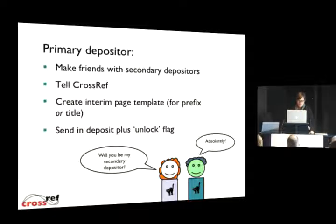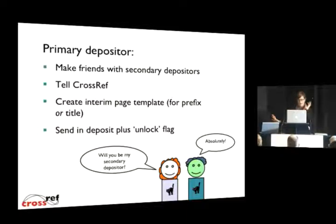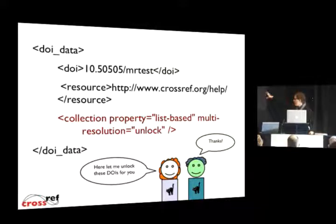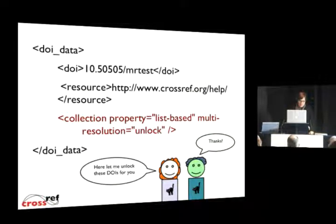We can have two primary depositors assigned to a prefix, but that occasionally causes problems — it's kind of a mess and I don't recommend it. People overwrite each other's metadata and get confused about who's primary and who's secondary, and it's very hard to figure out what's going on. For the primary depositor, you need to send in either with a metadata deposit or as a standalone deposit the unlock information — this unlock flag highlighted in red says 'collection property'. This flags the DOI as being a multiple resolution DOI.